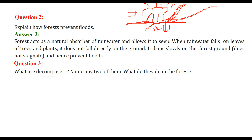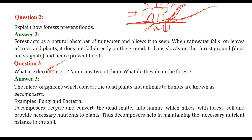What are decomposers? Name any two of them and what do they do in the forest? Decomposers are very minute microorganisms — certain insects also. They work on things that have decayed. The microorganisms that convert dead plants and animals to humus are known as decomposers.